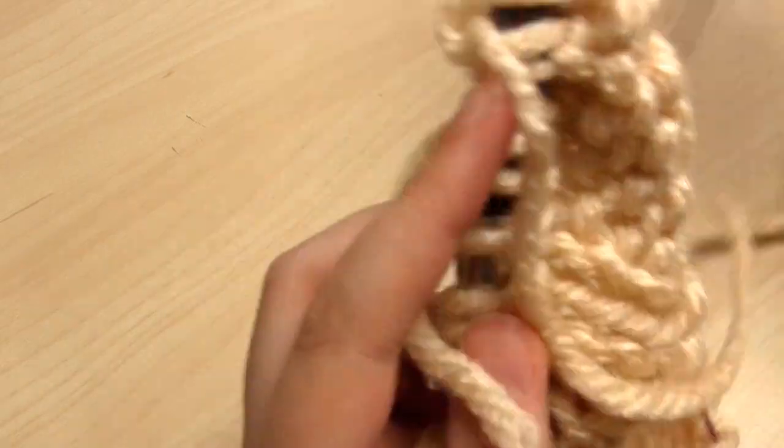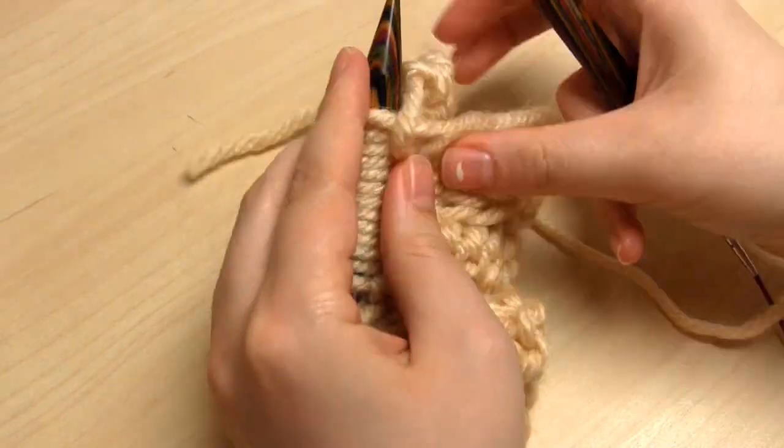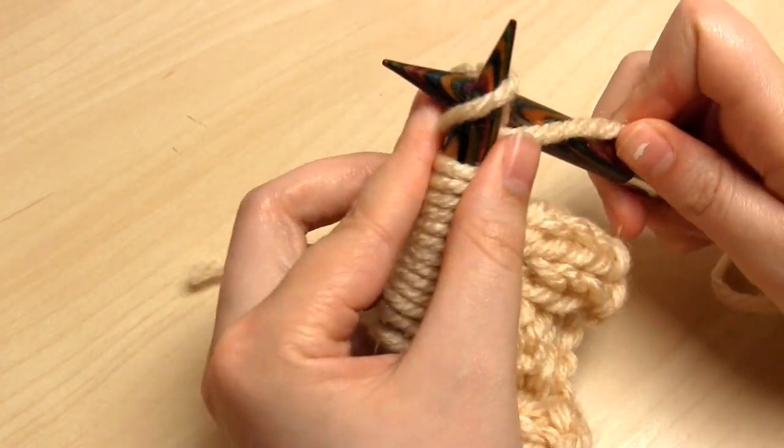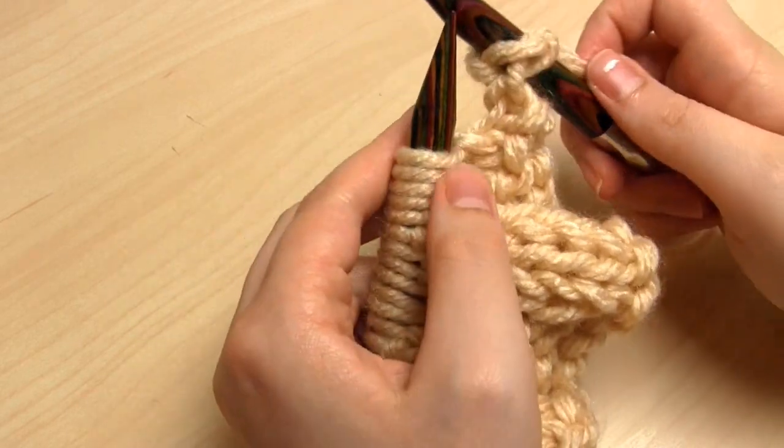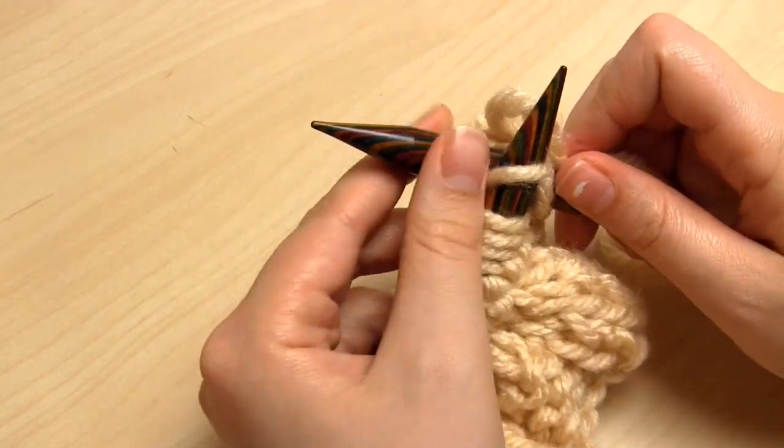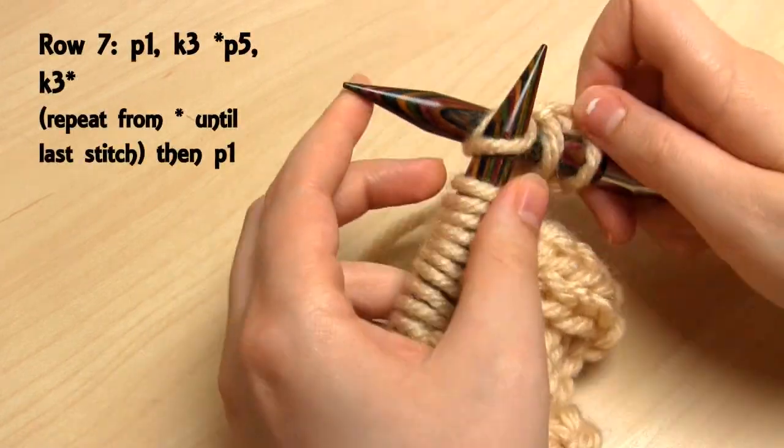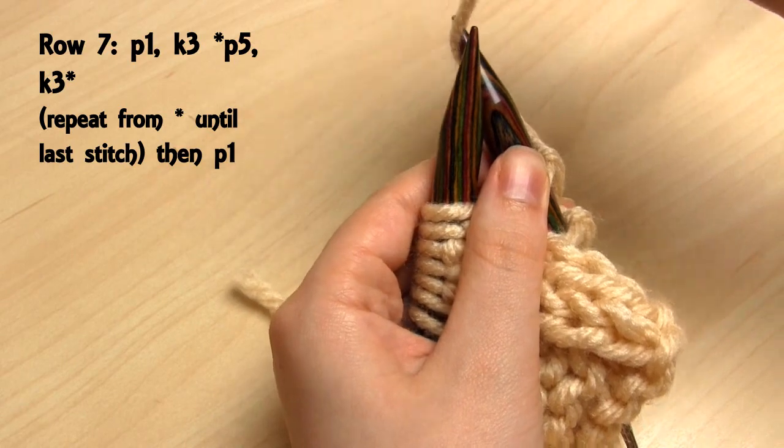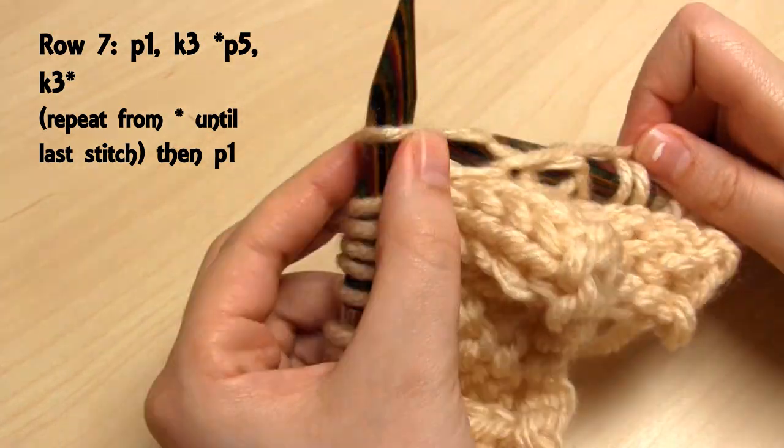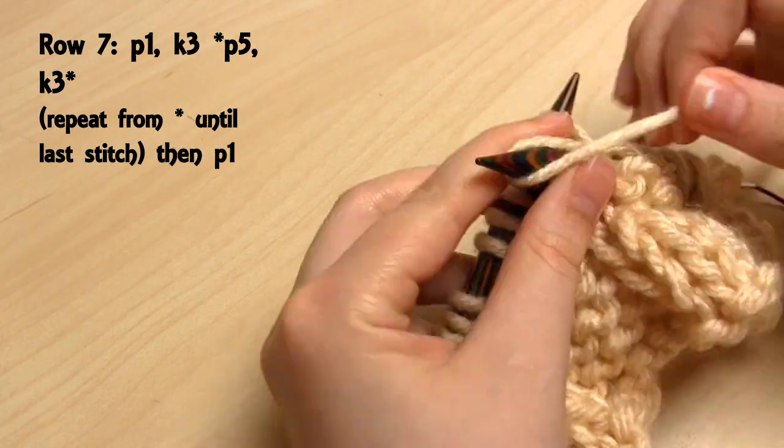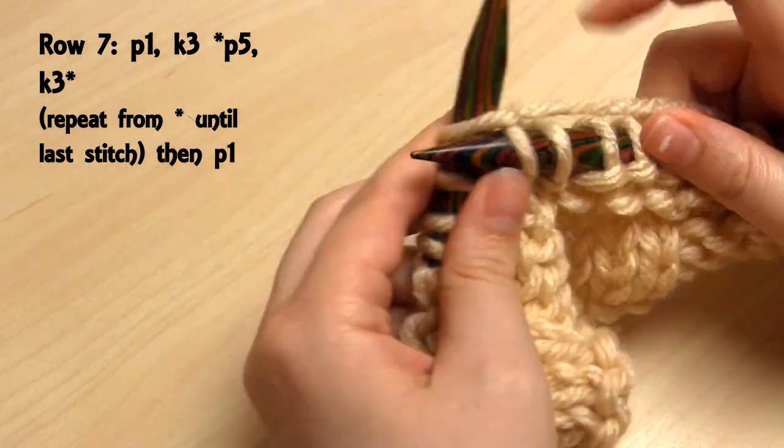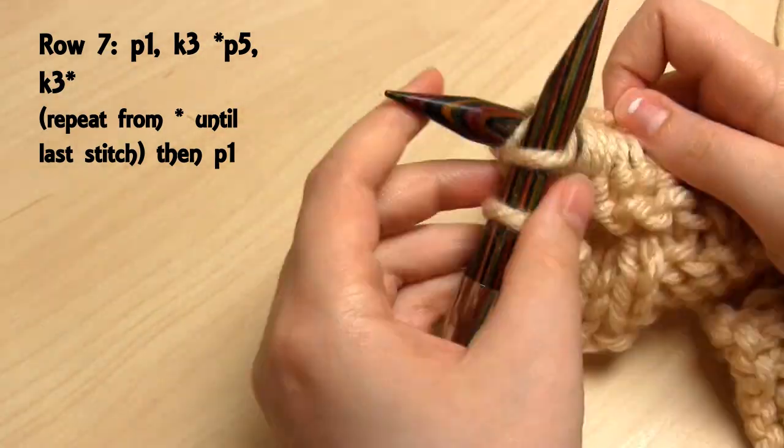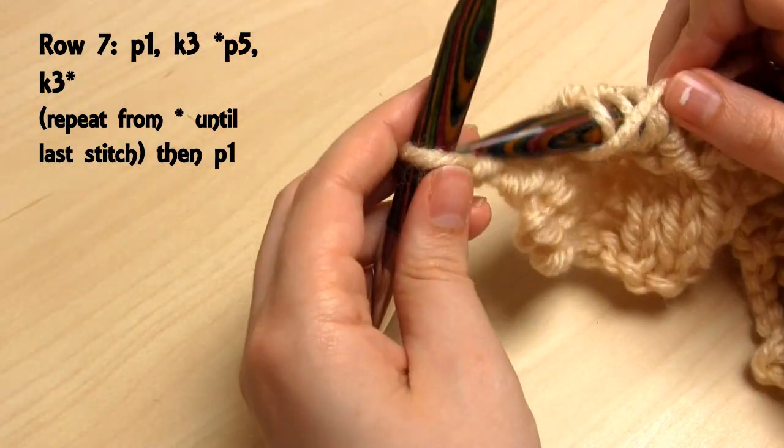Now the penultimate row, row 7. On row 7, you purl both the first and the last stitch. So the first is 1 purl stitch. You then do 3 knit stitches. Then the yarn comes forward for 5 purl stitches. And then you repeat 3 knit, 5 purl, 3 knit, 5 purl, until you get to 1 stitch away from the end of the row. And then you simply purl the last stitch.